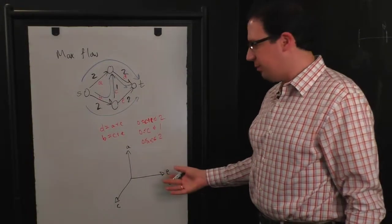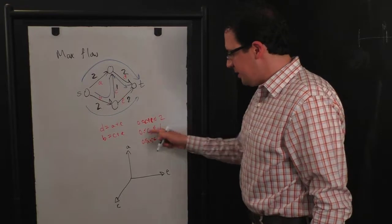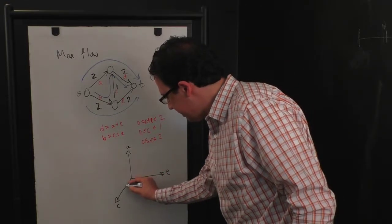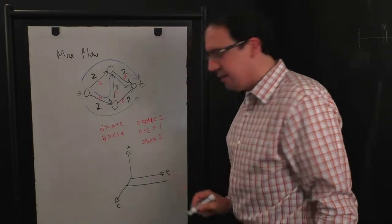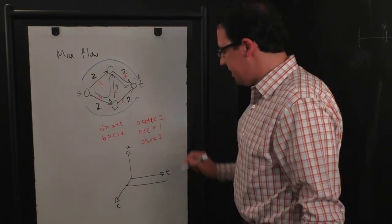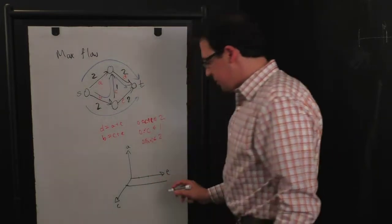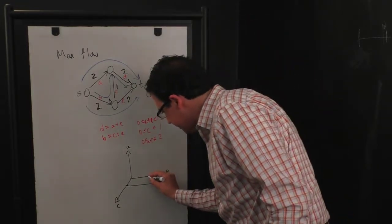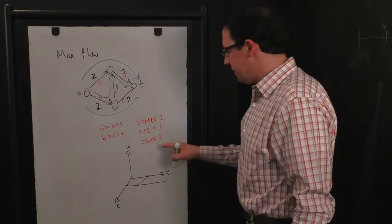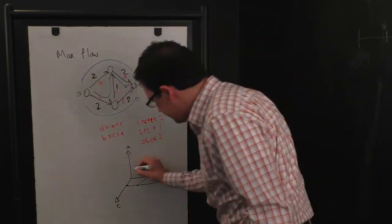So here we have our three variables, A, C and E. C is between zero and one. So C, let's say this is one. So C has to live in this little strip. C plus E is at most two. So that means whatever E is, it has to live in this region.